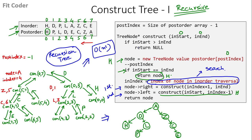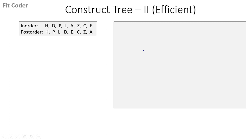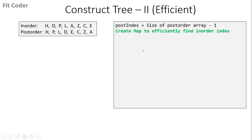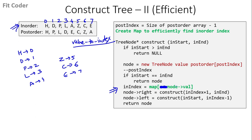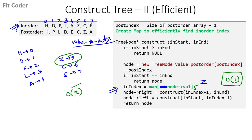There is a small optimization we can do. We will create a map which efficiently stores the inorder index — a value-to-index map where we store the values and their corresponding indices. So H maps to index 0, D to 1, and so on. In the step where we need to find the value of the node in the inorder traversal, we simply refer to this map and find the index in O(1) time instead of searching the entire array. This reduces the time complexity of the entire algorithm from O(n²) down to O(n).